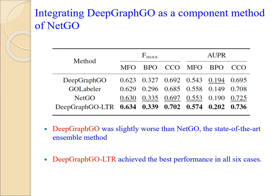This table shows the performance of DeepGraphGO, two state-of-the-art ensemble methods for AFP — GeoLevel and NetGO — and DeepGraphGO-LTR, which is generated by plugging DeepGraphGO into NetGO as a component to improve performance. DeepGraphGO outperformed GeoLevel in both BPO and CCO, while the performance of DeepGraphGO was slightly worse than NetGO, the state-of-the-art method. Furthermore, DeepGraphGO-LTR achieved the best performance in all three domains.